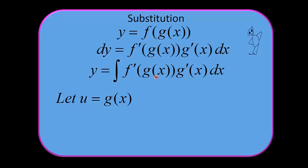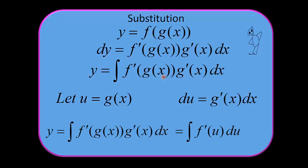I can just say: let this variable u equal g of x. Now I take that and put it in differential form, and have du equals g prime of x dx. Take a minute and dig what we have here. See this g prime of x dx right there? And I have it right here. Well, du is equal to g prime of x dx. So I should be able to take g prime of x dx and just replace that with du. And see this g of x? I'll just replace that with u. So this messy-looking thing can be replaced, and now we have something that's a little bit tamer looking.